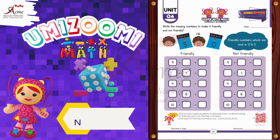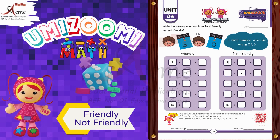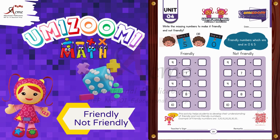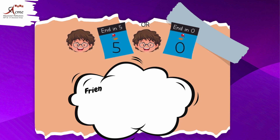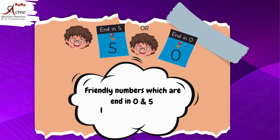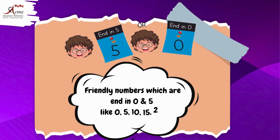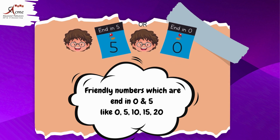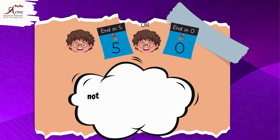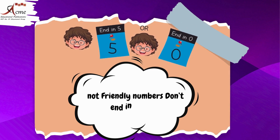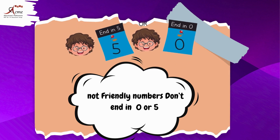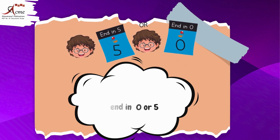Hello, friends. Today, we're going to learn about friendly and non-friendly numbers. Friendly numbers are numbers that end in 0 or 5, like 0, 5, 10, 15, 20, and so on. Non-friendly numbers do not end in 0 or 5. Are you ready for our activity? Let's get started.